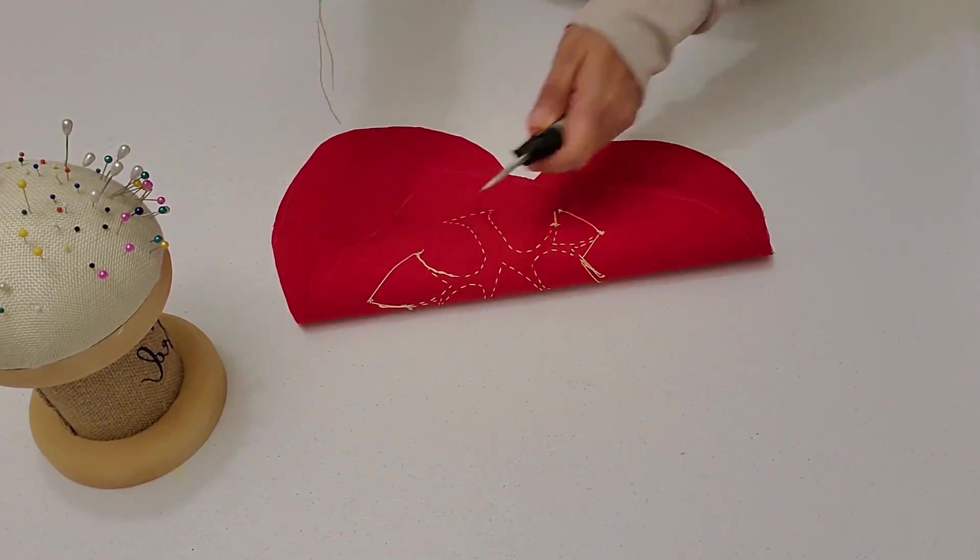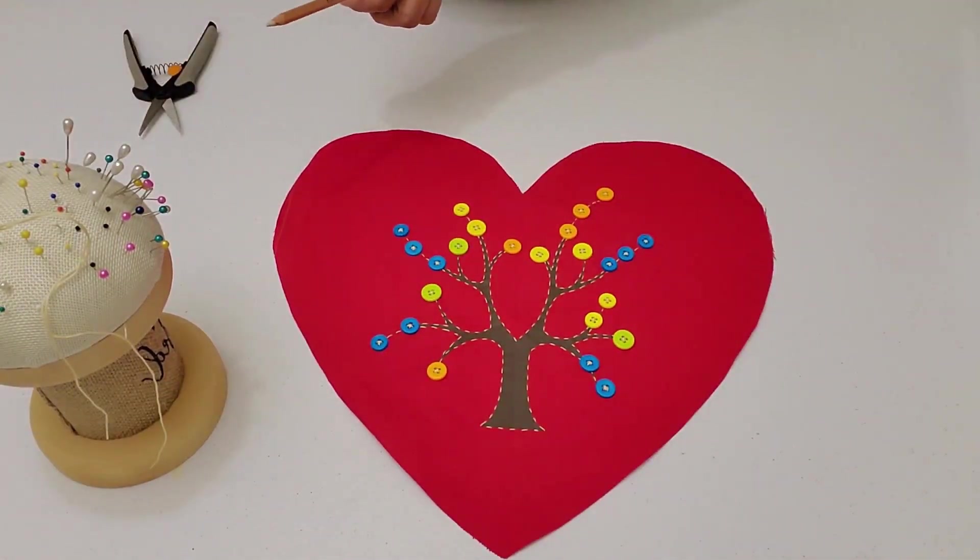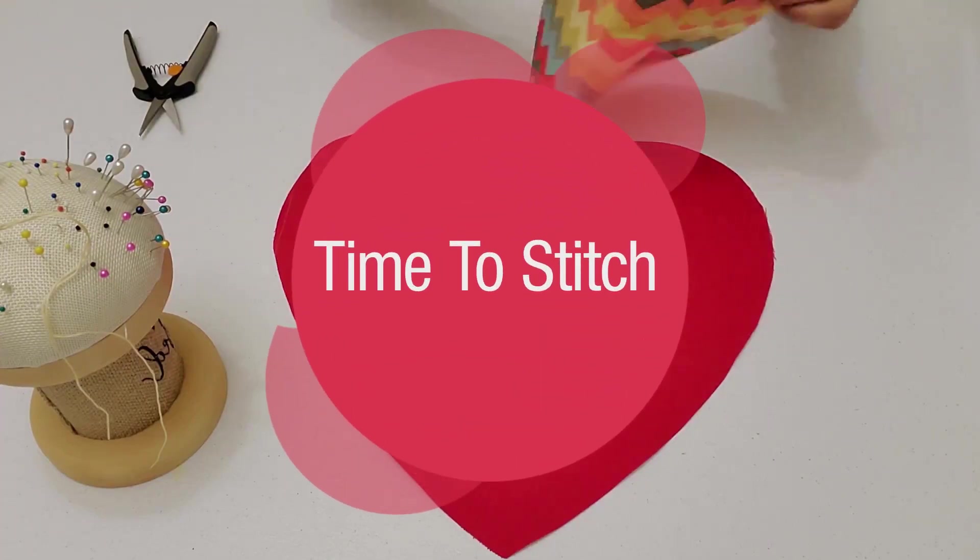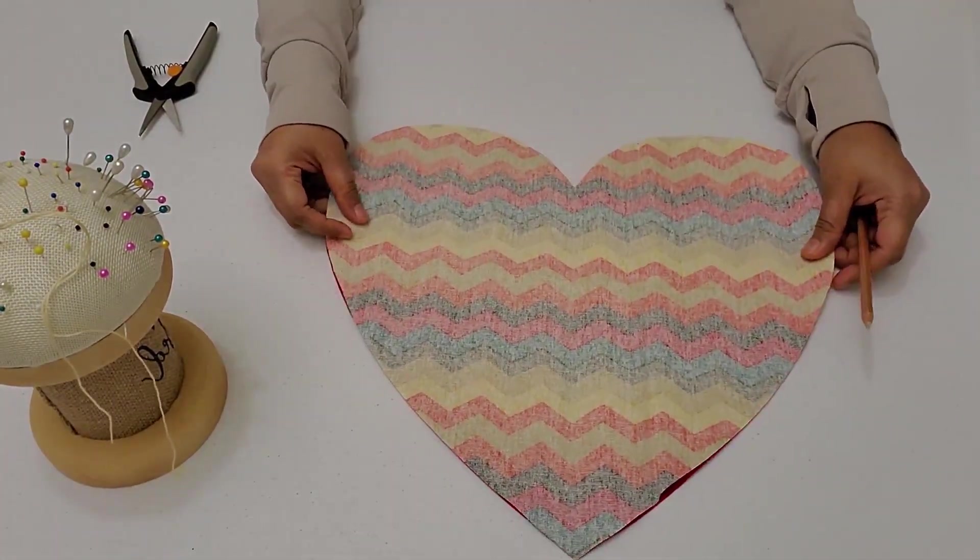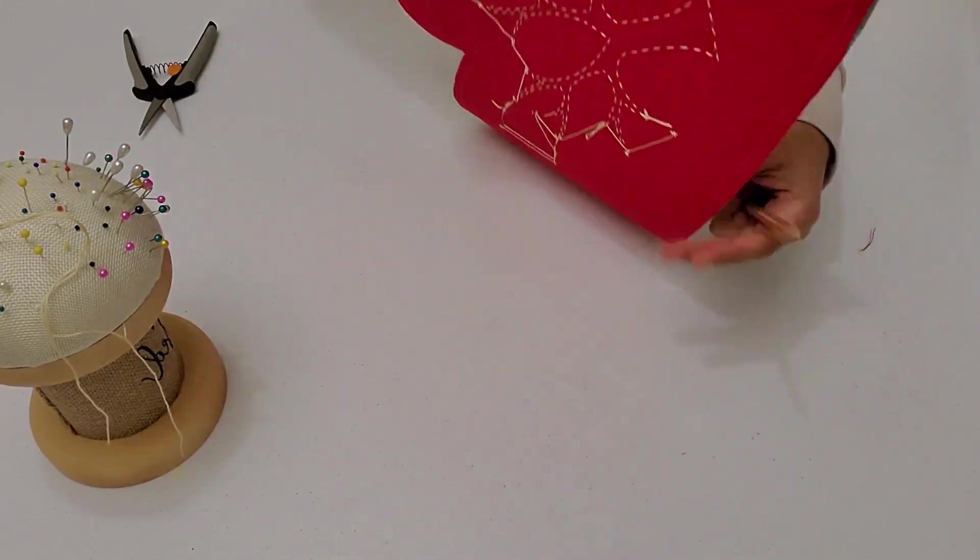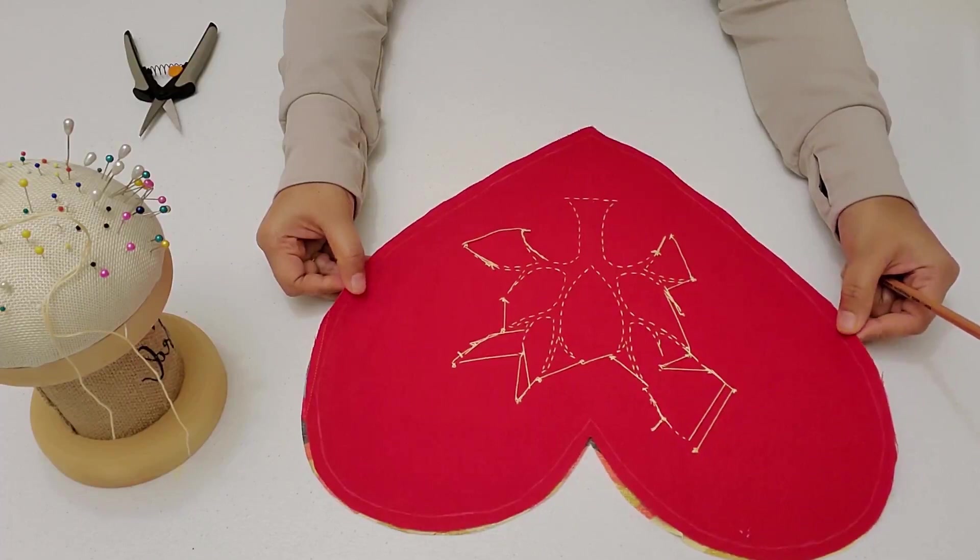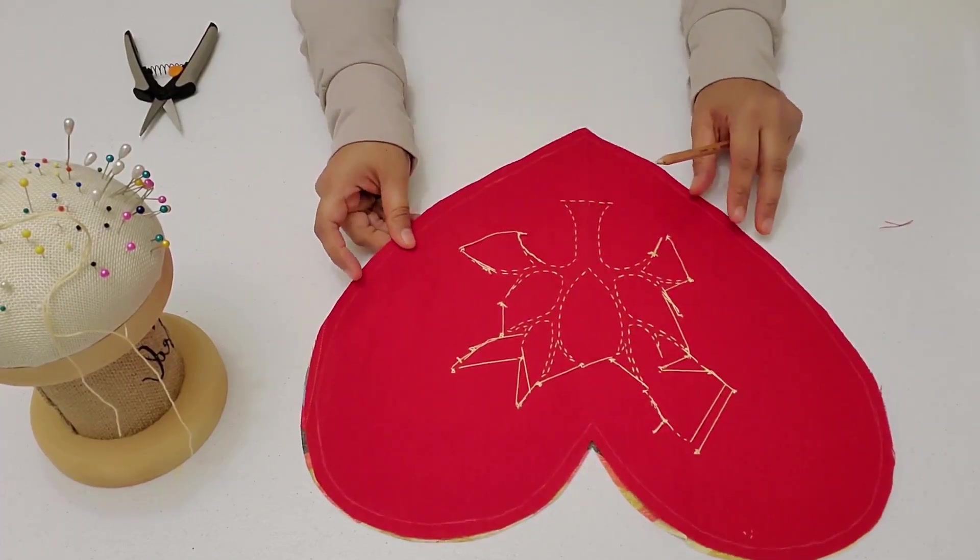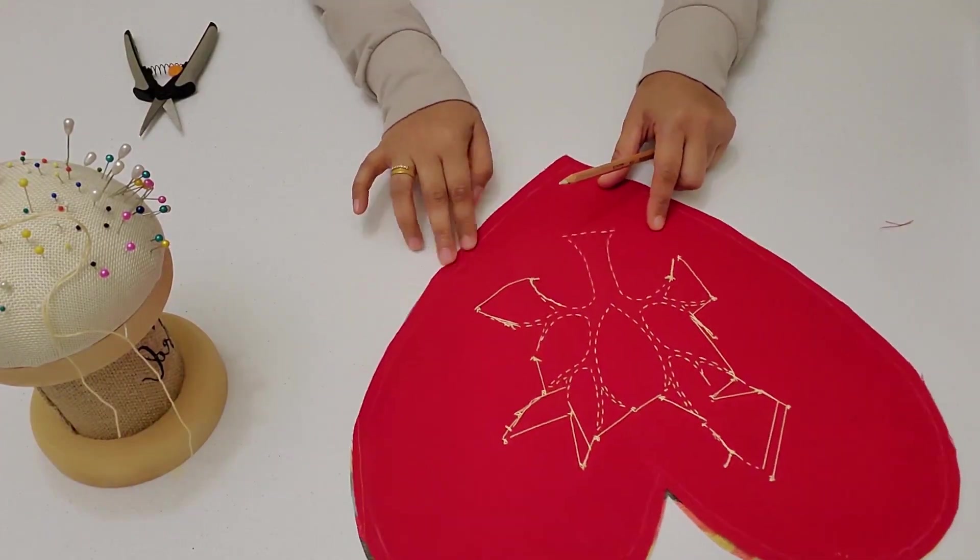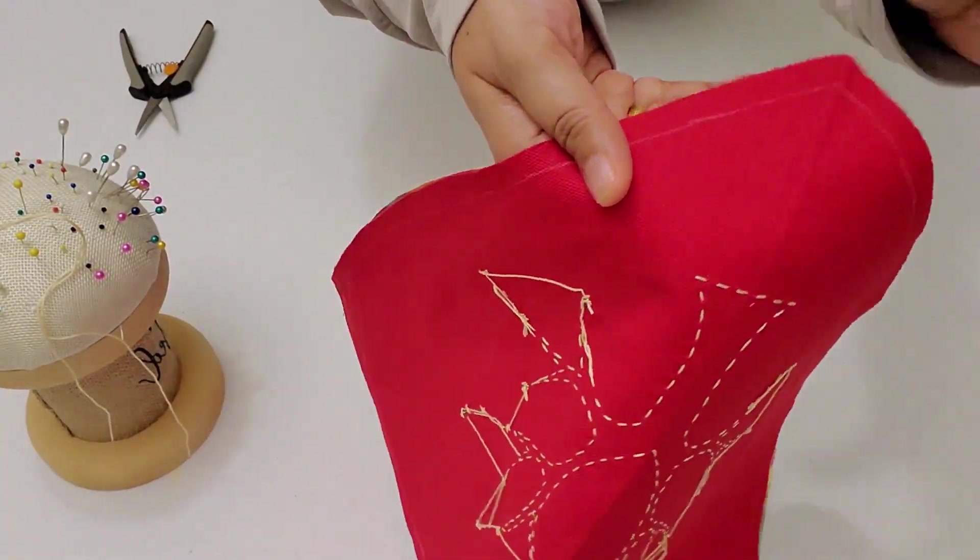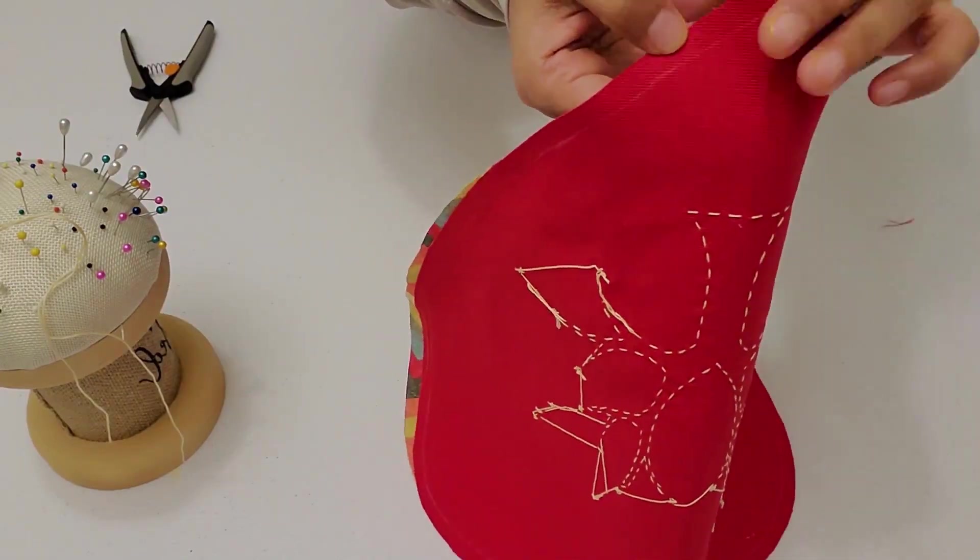Our next step is to stitch both our heart pieces together. We are going to put both the good sides together. So for this, we can either use a sewing machine or we can do with hand. Even though I'm going to complete it with the sewing machine right now, I'm going to show you if you don't have a sewing machine how you can do the edges using backstitch. If you can see, I have drawn a line, a guide line, keeping one-fourth of an inch for me to do the backstitch.